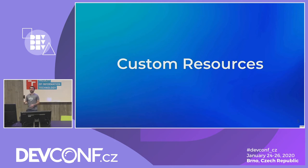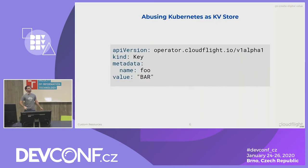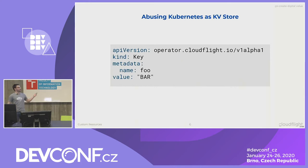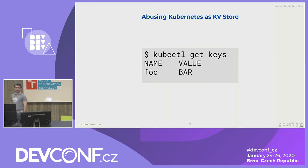Custom resources can be namespaced or cluster scoped, and they have a few advantages over just providing a plain old API. A custom resource can be, for example, a resource called 'key' with a single field called 'value' — basically abusing Kubernetes as a key-value store. Custom resources do absolutely nothing on their own; they get saved into Kubernetes like any other resource, but there's no logic behind a custom resource. It's just a schema to store additional resources into Kubernetes, and afterwards we can use our standard kubectl tooling to interact with them.